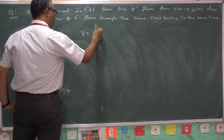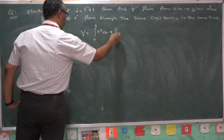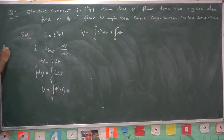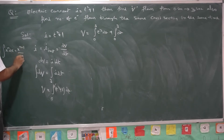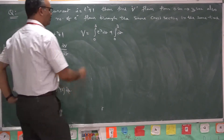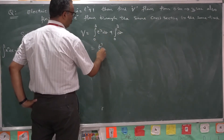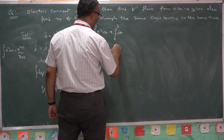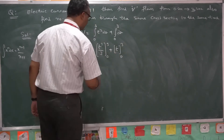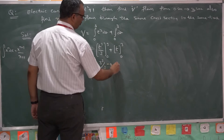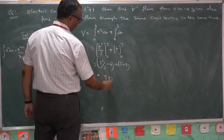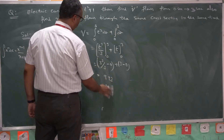So Q = integration from 0 to 3 of t² dt plus integration from 0 to 3 of dt. Using the formula ∫xⁿ dx = xⁿ⁺¹/(n+1), this becomes [t³/3] from 0 to 3 plus [t] from 0 to 3. That gives 3³/3 − 0 plus 3 − 0 = 9 + 3 = 12 Coulombs. 12 Coulombs is the charge flown through the cross section within the time gap of 0 to 3 seconds.